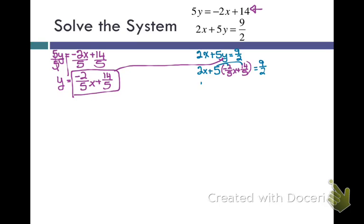Now I need to solve this equation. The very first thing I'm going to do is distribute. I'm going to bring down my 2x because I'm not going to use it right now. Five times negative 2 fifths is negative 2x, plus, and I'm using my calculator to do this, five times 14 fifths is 14 equals 9 halves. Now I'm going to combine like terms. I've got 2x plus negative 2x that gives me zero, but I'm not going to write that zero down. They just kind of cancel each other out.